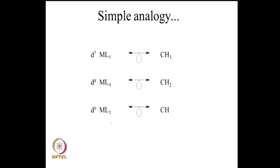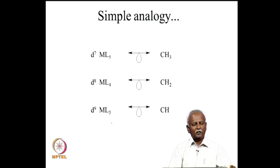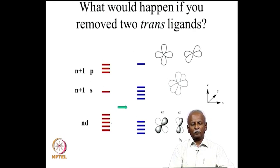In summary: the CH3 fragment is isolobal with a d⁷ ML5; CH2 is isolobal with a d⁸ ML4; and CH is isolobal with a d⁹ ML3. Each is an isolobal replacement. Generating fragments from other geometries also yields isolobal equivalents.